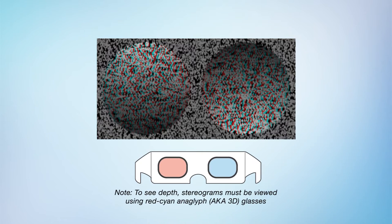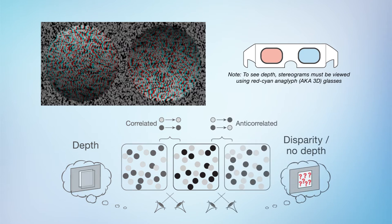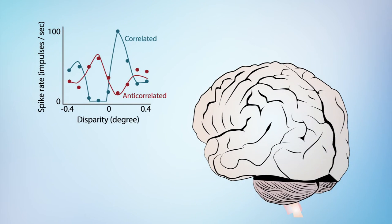Stereograms, for example, are useful tools because researchers can separate how the brain responds to disparity from the experience of depth. When the dots for each eye don't match, there's no sensation of depth, but there is disparity. Measurements have revealed that neurons in the primary visual cortex still respond if the dots don't match, suggesting that stereo vision requires other parts of the brain.